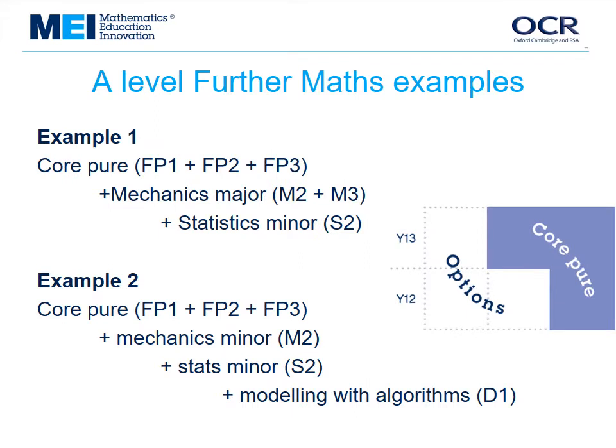Here are the two examples together. In example one, you study two optional topics but do a lot of mechanics — a major and a minor. In the second example, you study three different optional topics: three minors. It's important to note that even though some options can be taught in Year 12 and others in Year 13, all the exams for the whole A-Level must be taken together at the end of the course.